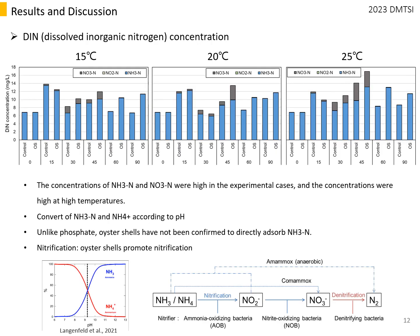The change in dissolved inorganic nitrogen concentration is as follows. The nitrite concentration was very small and did not change significantly. The concentration of ammonia and nitrate in the experimental cases were higher than those in the control, and this increased as the water temperature increased.